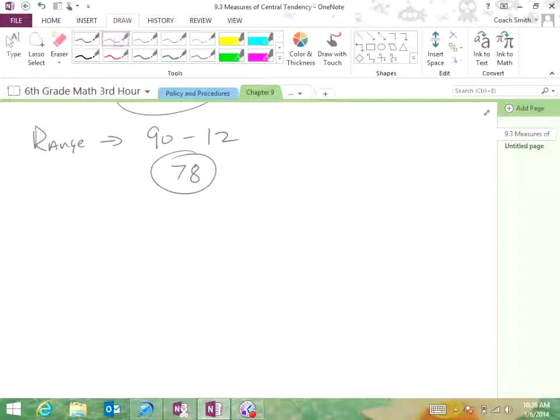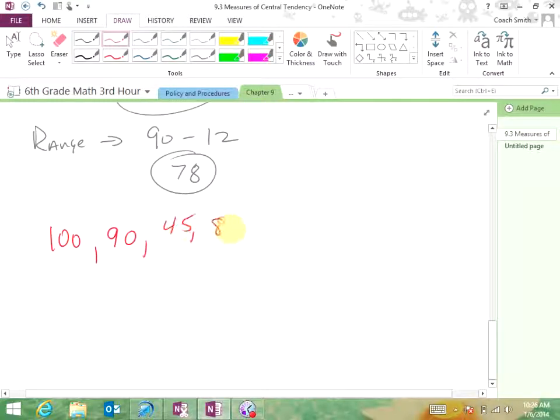Let's look at another set of data. So, we have 100, we have 90, we have 45, we have 88, and we have 87. So, we know this, that our mean will be between 45 and 100. We know that our median will be between 45 and 100. Possibly have a mode. Do we have a mode? No. We don't have a mode. No mode. No mode, please. No mode.